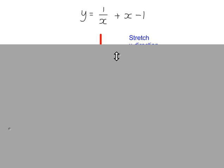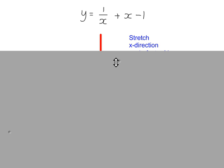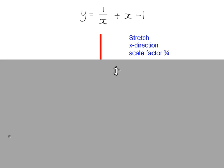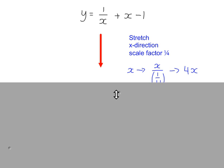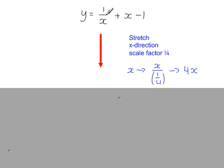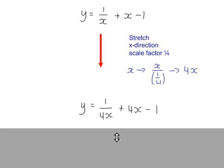Now we're going to stretch the graph in the x direction by a scale factor of a quarter. So we replace the x in the equation here with x divided by the stretch factor of a quarter, which simplifies to 4x. So replace the x here with 4x to get this.